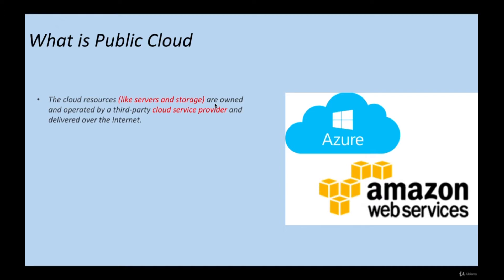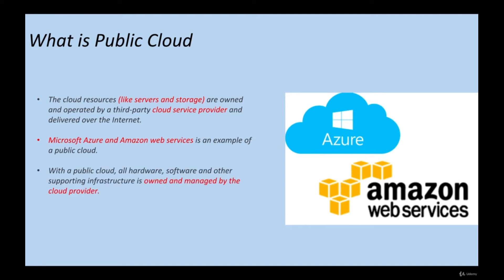In public cloud, resources like storage and servers are owned and operated by a third-party cloud service provider and delivered over the internet. All virtualization and base infrastructure is provided by the cloud vendor. You install your OS and applications, but the underlying infrastructure is managed by the cloud vendor — such as Microsoft Azure or Amazon Web Services. All hardware, software, and supporting infrastructure is owned and managed by the cloud provider.